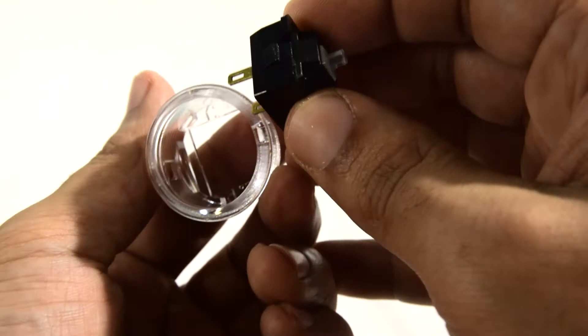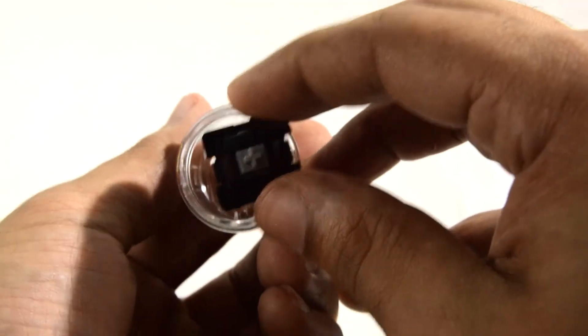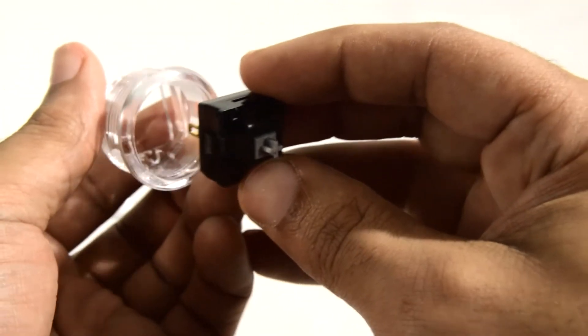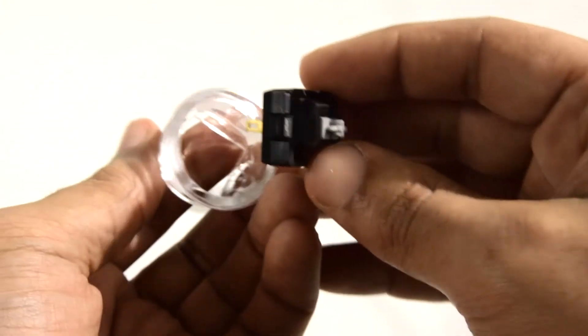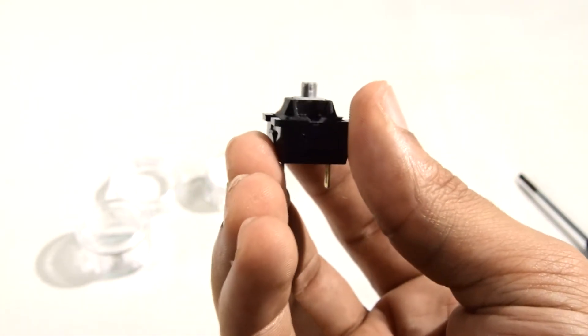You are now down to the switch in the switch base. Take note of the orientation of the base in relation to the barrel upon the base's removal. It can only go back one way. A good way to remember it is that the blades point in the same direction as the slots on the barrel that hold the plunger in place. Go ahead and set the barrel aside.